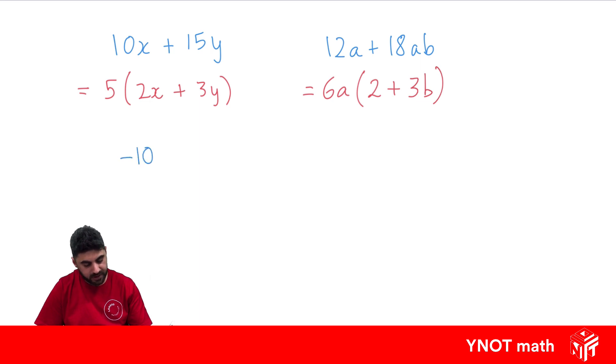What about minus 10a minus 20? Well, these are both negative, so it makes sense to take out a negative as a common factor.